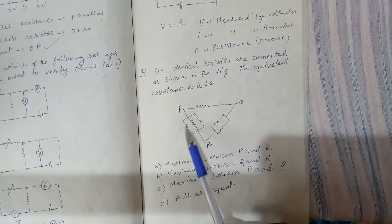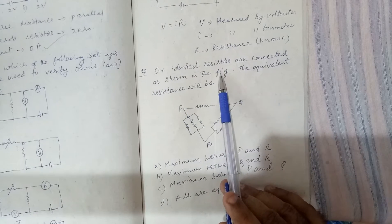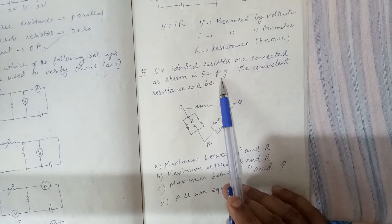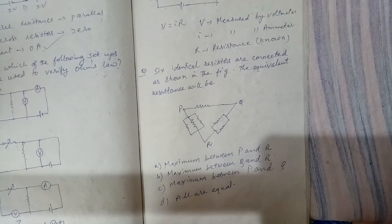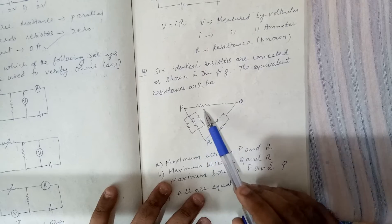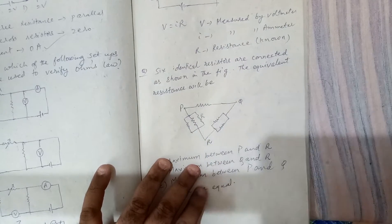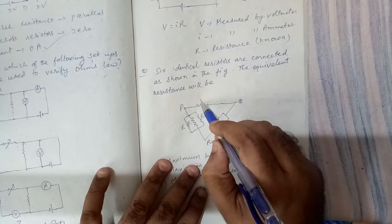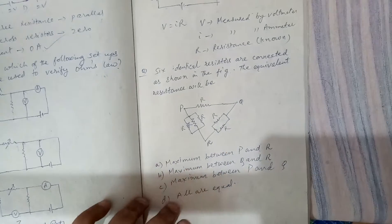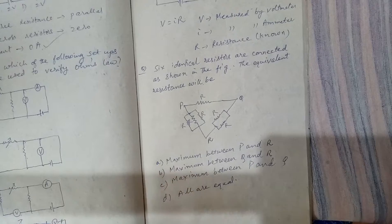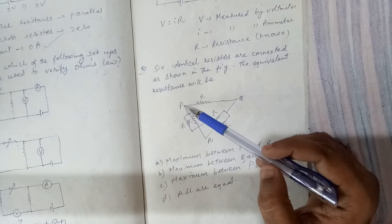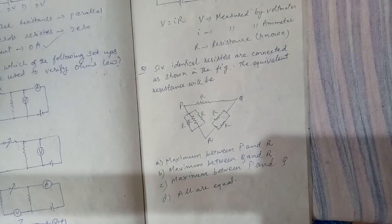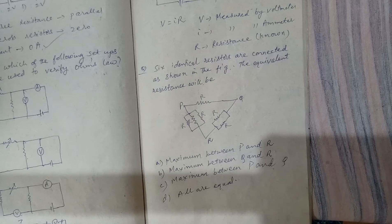Question: six identical resistors are connected as shown in the figure. There are six resistors — one, two, three, four, five, six — all are R only, all having the same value. It says the equivalent resistance will be maximum between P and R, Q and R, or P and Q. We have to find where the equivalent resistance will be the maximum value.